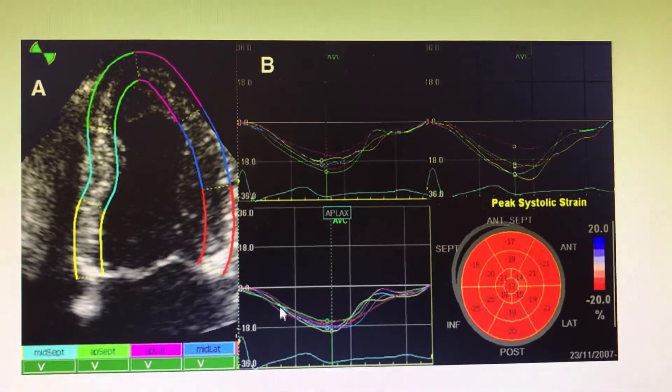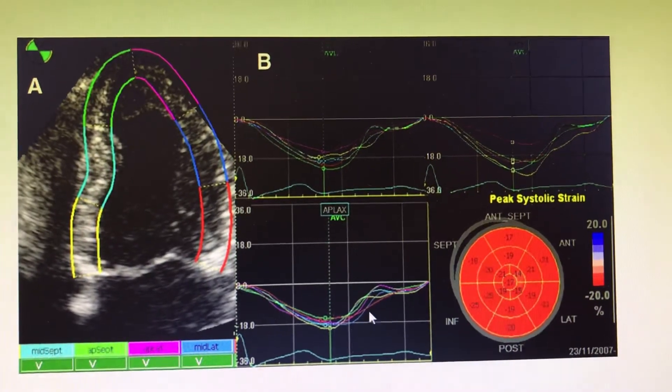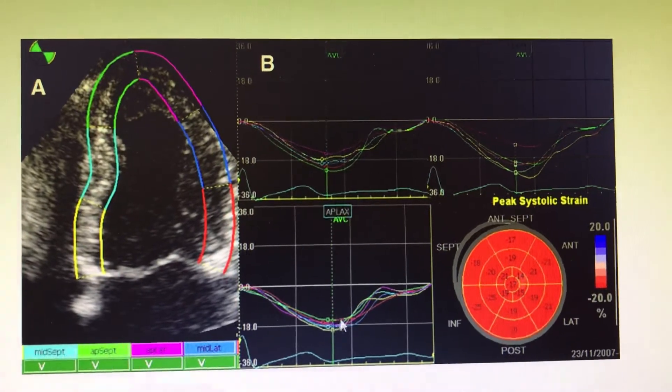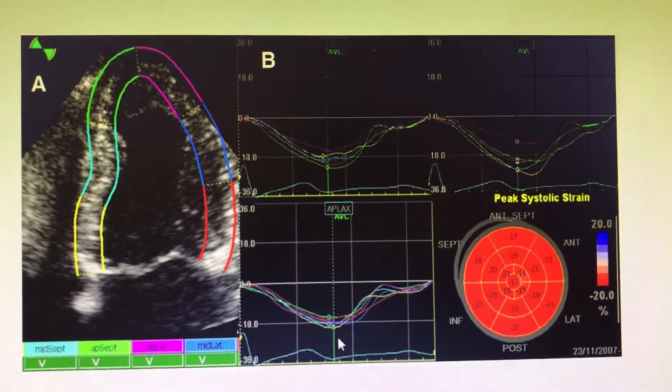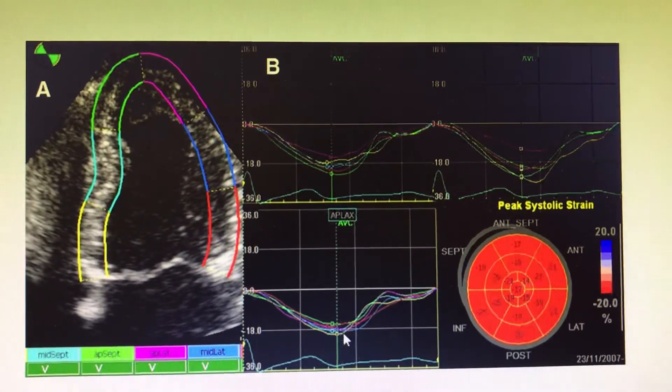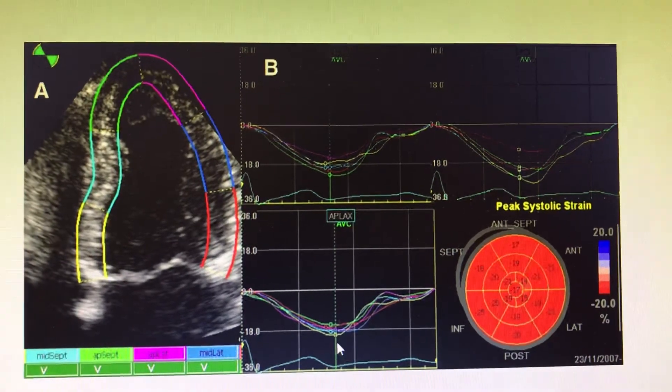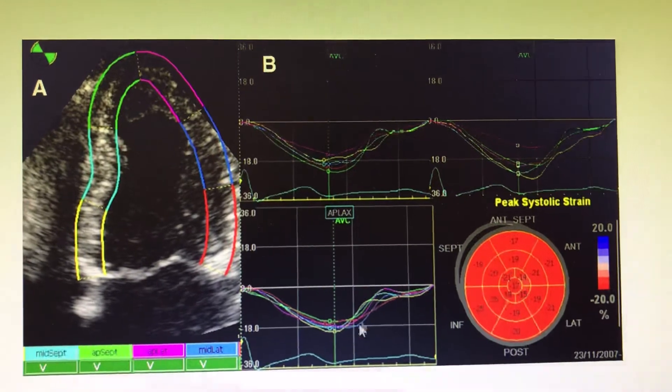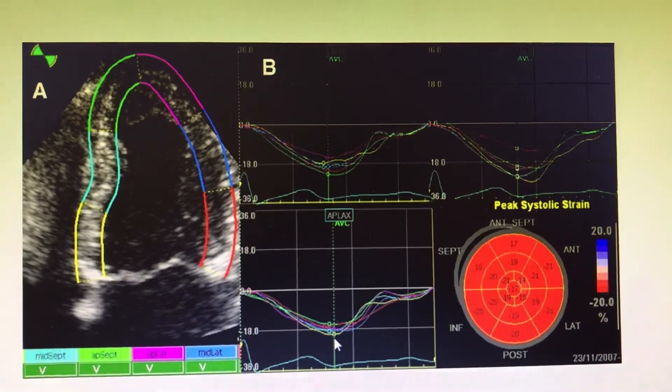You can see that all the color codes are going in the negative direction. At the end of systole, at maximum systolic contraction, the peaks are much more negative. The yellow is more negative and green is minimally negative because the apex contracts much less compared to the lateral and basal walls.